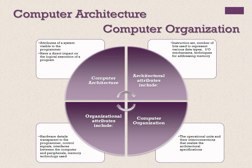Computer architecture refers to those attributes that have a direct impact on the logical execution of the program, whereas computer organization refers to the operational units and interconnections that realize the architectural specifications. For example, architectural attributes include the instruction sets, the number of bits used to represent various data, I/O mechanisms, and techniques for addressing memory. Organizational attributes include hardware details transparent to the programmer, such as control signals and interfaces.